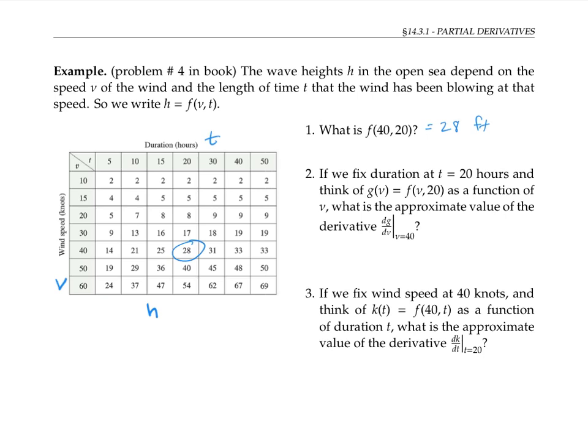Now, if we fix the duration at t equals 20 hours, we can look at f(v,20) and think of this just as a function of v, we'll call it g(v). So we can ask, what's the approximate value of the derivative dg/dv when v equals 40?